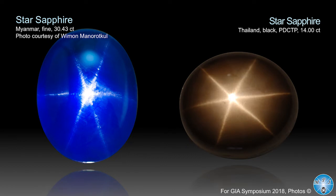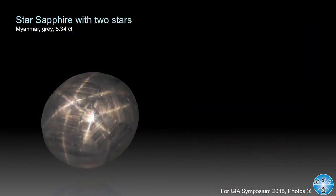There's the Ban Kha Cha mining area in Thailand — pretty close to perfect. Normally you can have them in calibrated sizes and they're not very expensive, but it's difficult to get a perfect star at 14 carats. This is a kind of black star sapphire. You can also have golden stars from the Ban Kha Cha mining area, and green star sapphires as well.